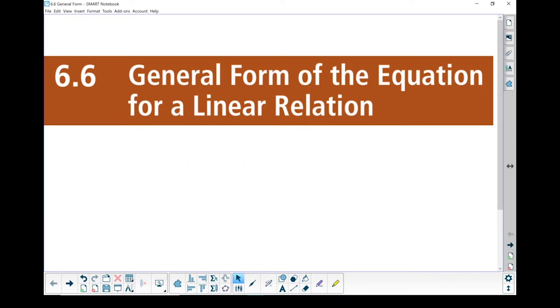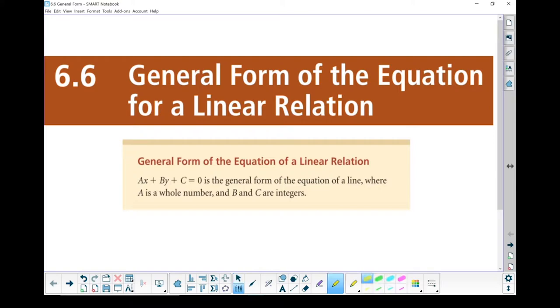Section 6.6, General Form of the Equation for a Linear Relation. This is the third form of the equation for a linear relation we're dealing with. In this form, it looks like ax plus by plus c equals zero.